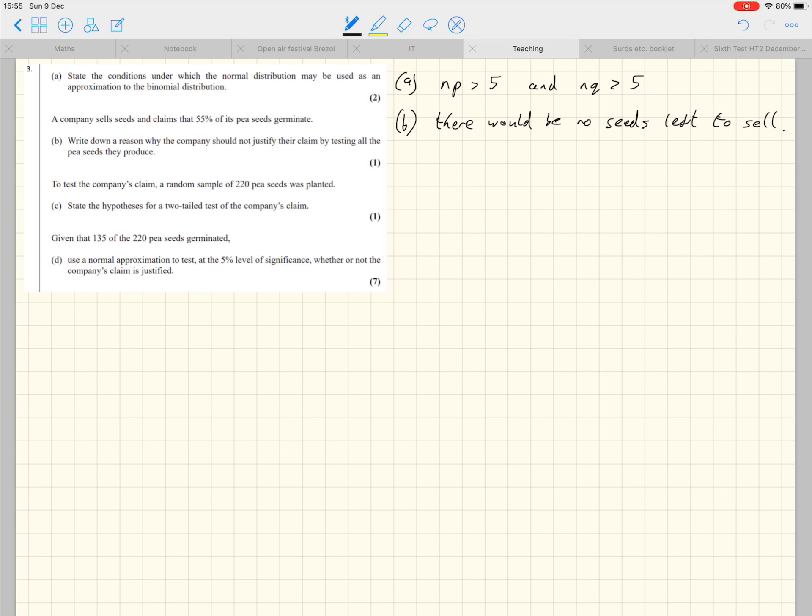Okay, part C just asks us to write down the hypotheses for this hypothesis test that we're going to do in part D. Now, note back up in part A, before we get any further, we were stating the conditions under which the normal distribution may be used as an approximation to the binomial distribution.